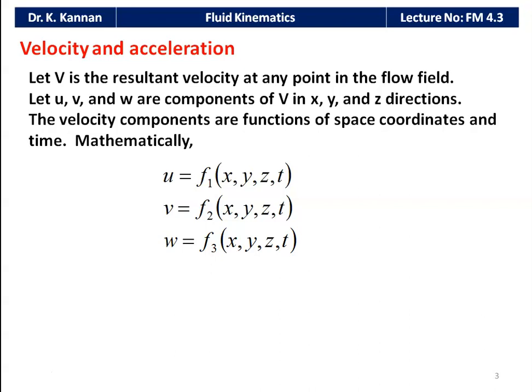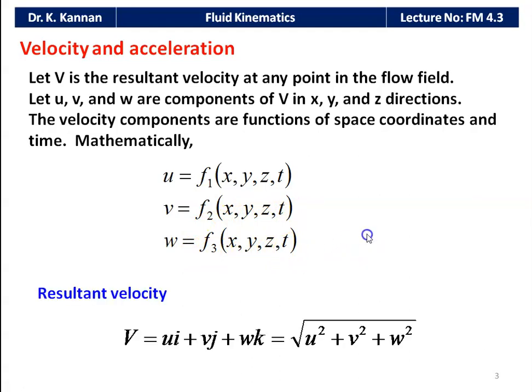The velocity components are functions of space coordinates and time. In general, we take three-dimensional unsteady flow and simplify it for mathematical calculation. Velocity u in the x direction is a function of x, y, z, and t; v is also a function of x, y, z, and t; and w is a function of x, y, z, and t. The resultant velocity is V = ui + vj + wk, which equals the square root of u² + v² + w². This equation is important to remember for solving problems.